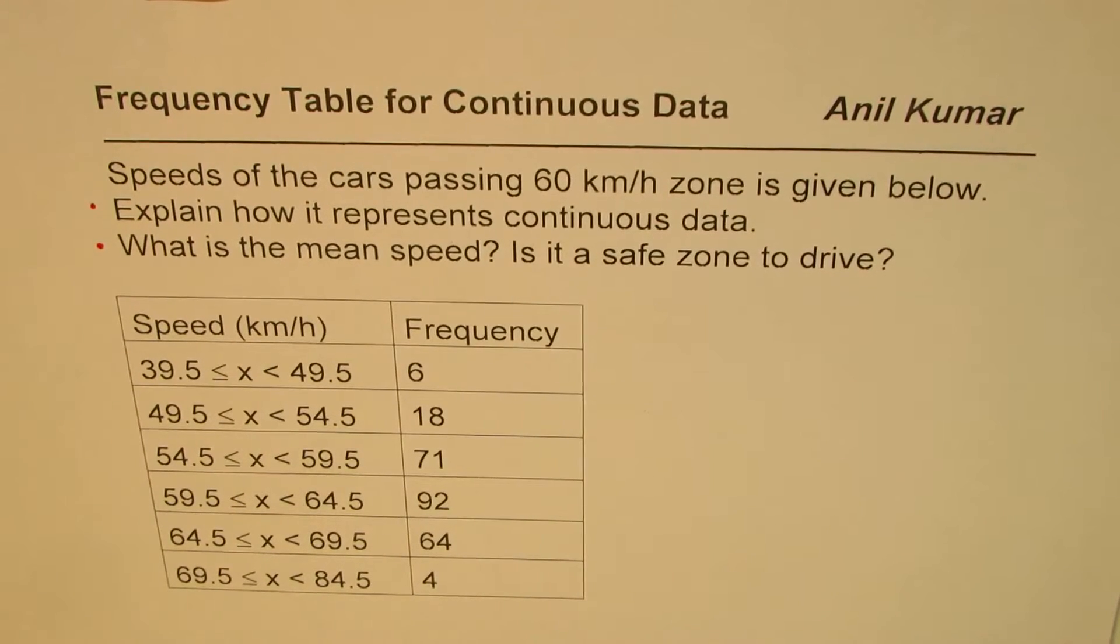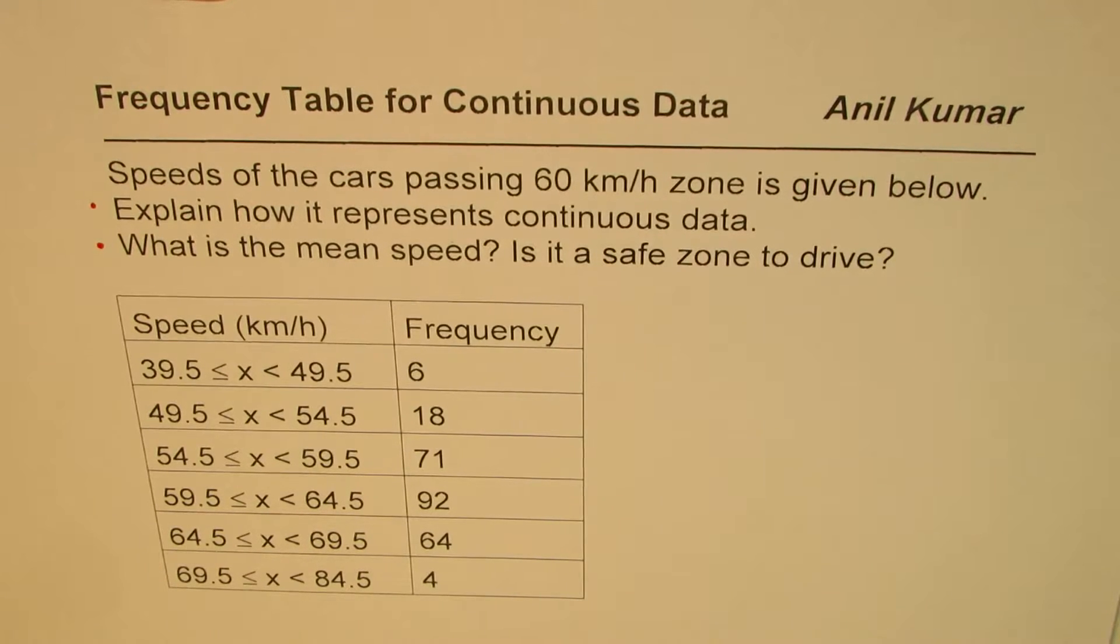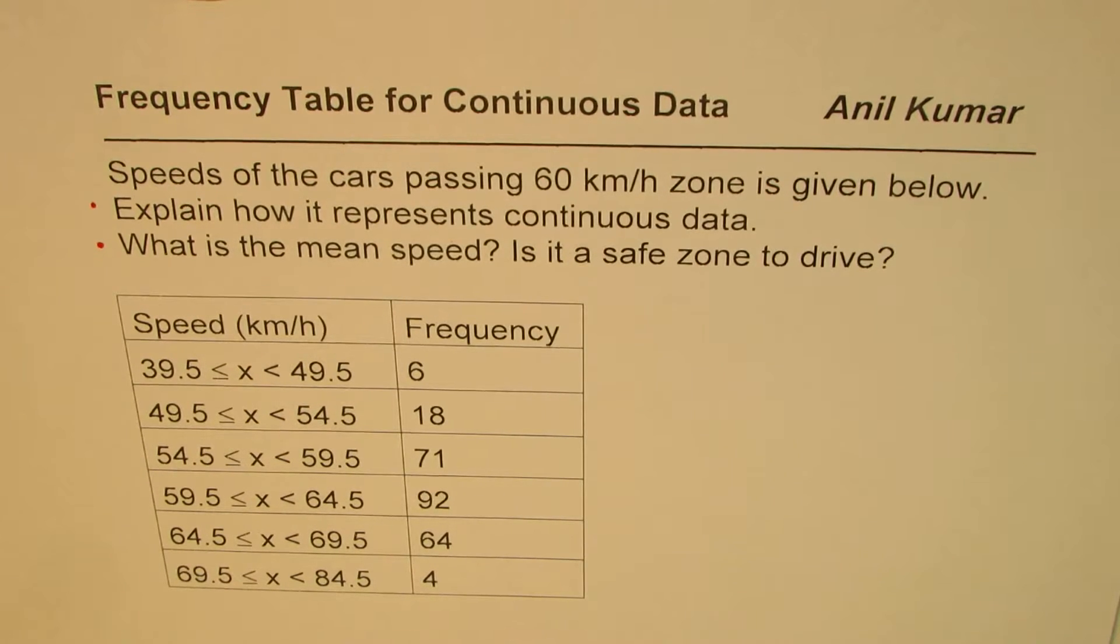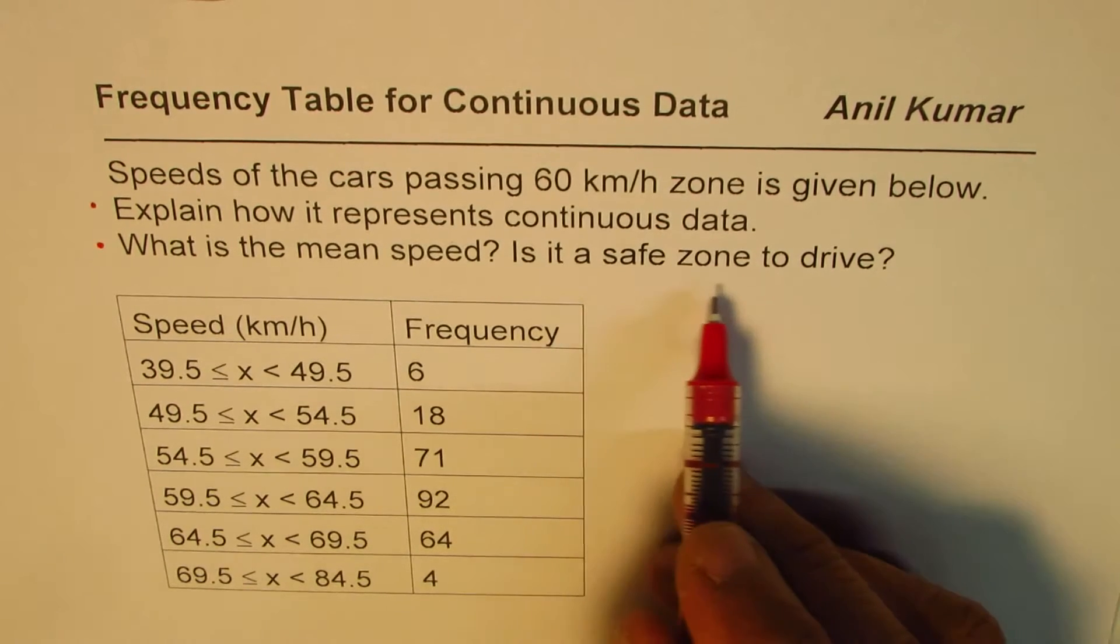I'm Anil Kumar and in this video we'll understand how to analyze continuous data using frequency tables to find mean. The question is: speeds of cars passing a 60 kilometers per hour zone is given below. Explain how it represents continuous data and what is the mean speed? Is it a safe zone to drive?